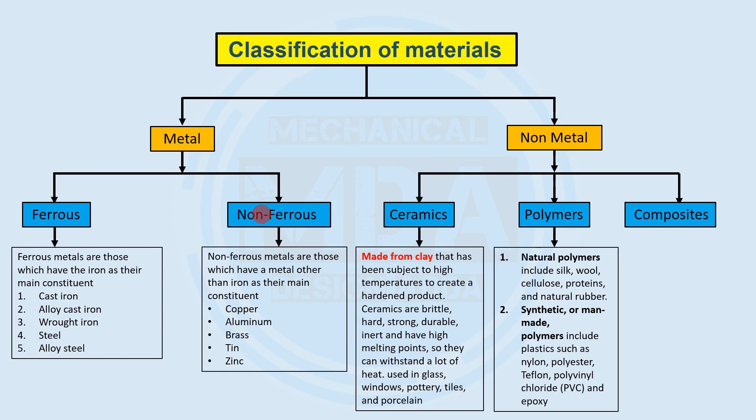Polymers come in two categories: natural polymers and synthetic polymers. Natural means they occur naturally. Examples of natural polymers include silk, wool, cellulose, proteins, and natural rubber.